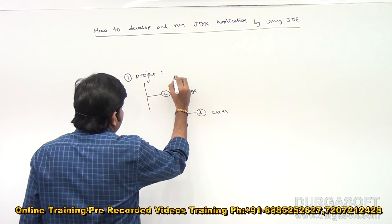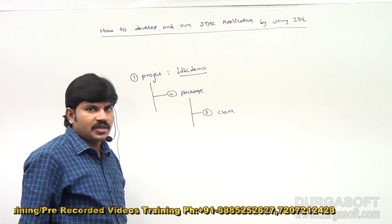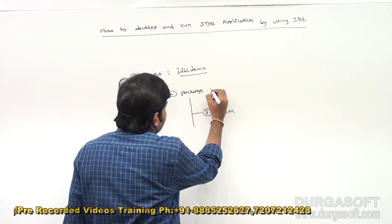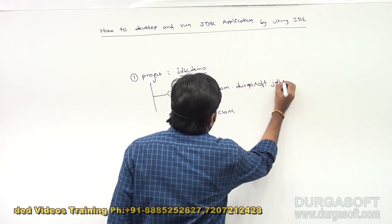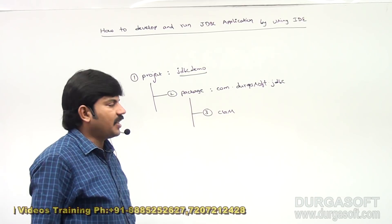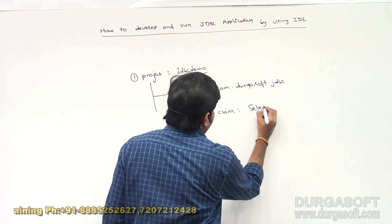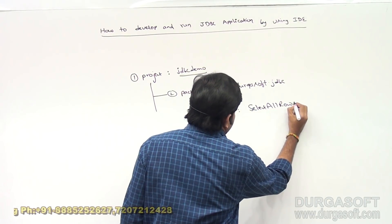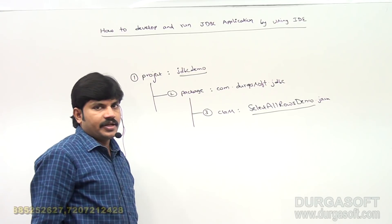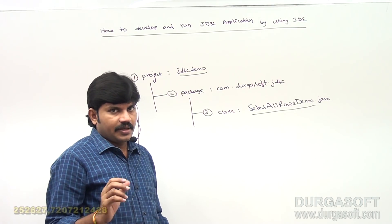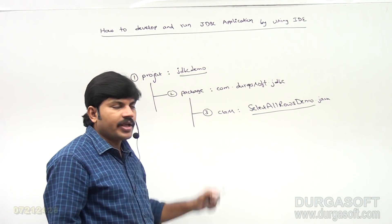My project name is 'jdbcdemo'. The package name is com.durgasoft.jdbc. Next I'm taking a class named SelectAllRowsDemo.java. So in Eclipse, first we have to create a project, under that project we have to take a package, and under that we have to write a class.